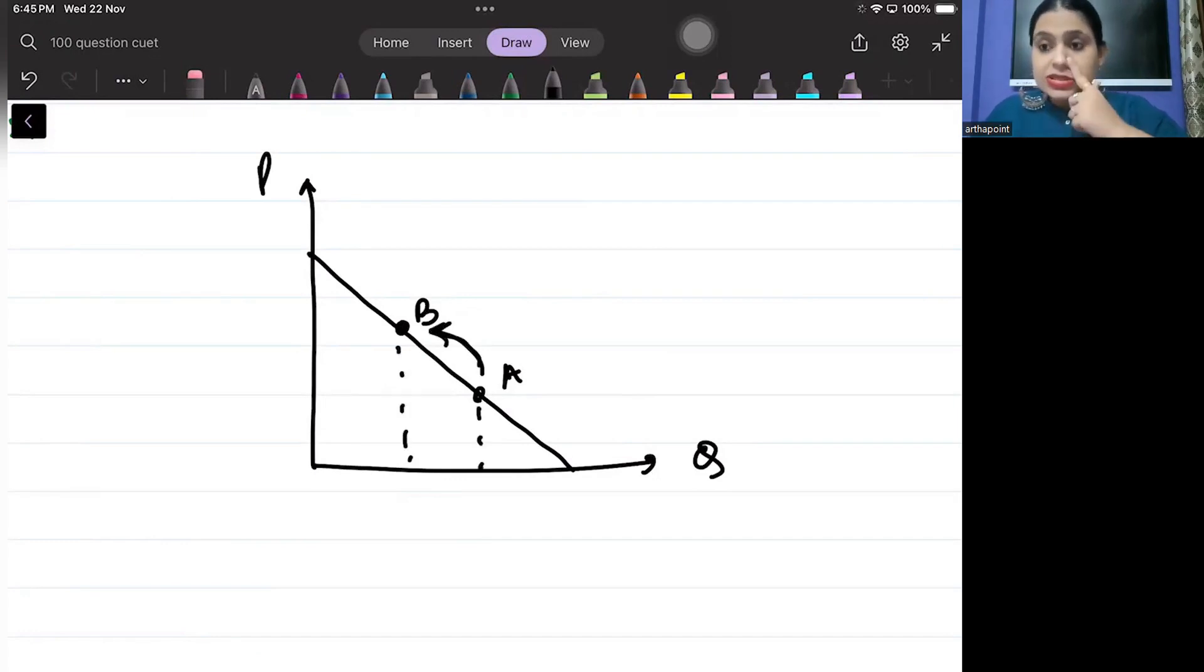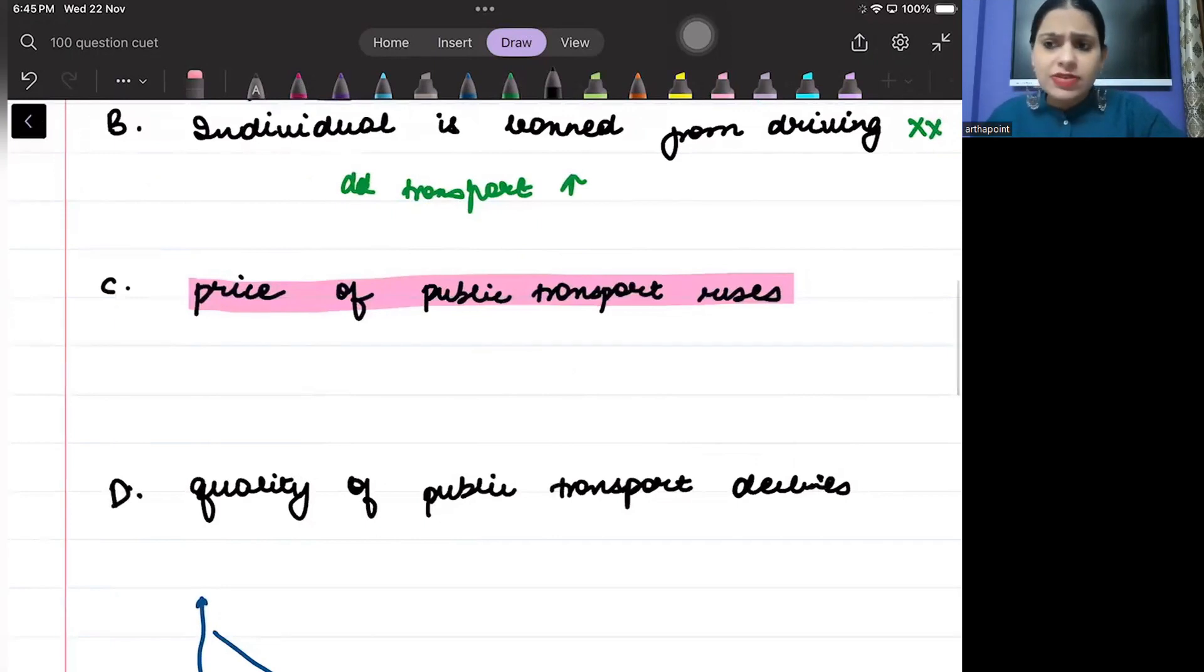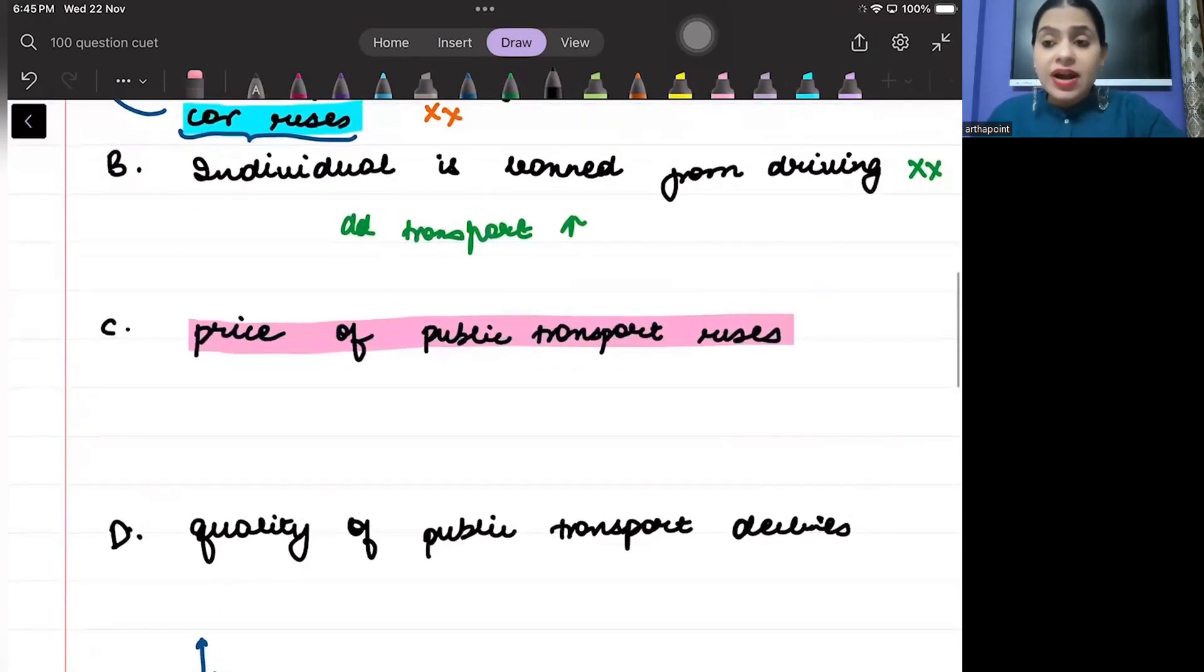Now, the reason is price. Whenever it is due to price, it always is a movement along the curve. So, price of public transport increases. Demand does not decrease.